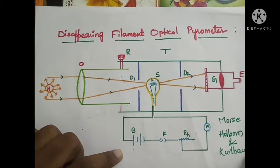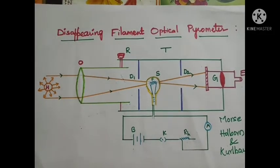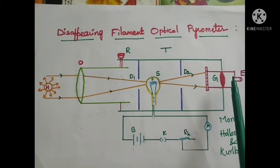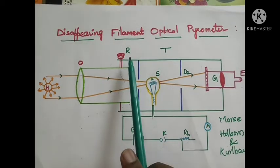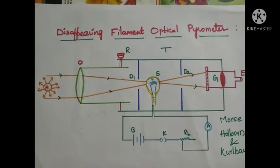This device was designed by Morse and further improved by Holborn and Kurlbaum. This pyrometer consists of a telescope T fitted with an objective lens O at one end and an eyepiece E at the other end. The distance between the objective and eyepiece can be varied by a rack-and-pinion arrangement, so with the help of this screw we can move the objective and telescope together.